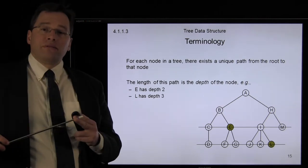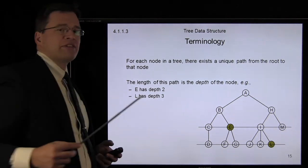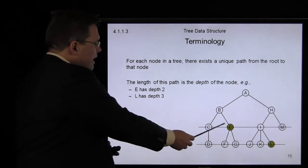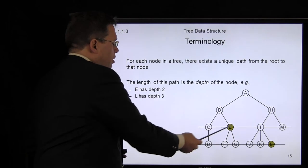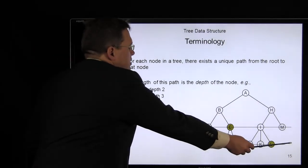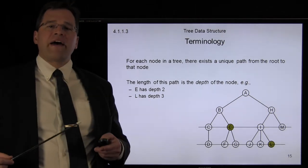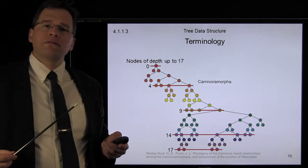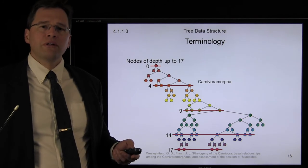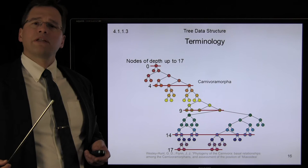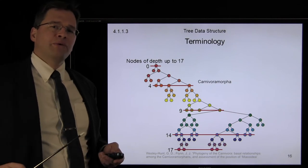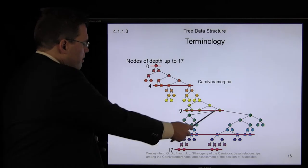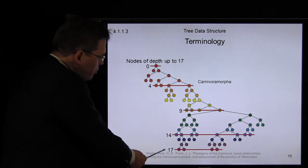If we take this root node, for every single node there is a unique path from the root node. The length of that path will be said to be the depth of the node. In this case, E has depth two, as do all these other nodes here. Similarly, L has depth three, as do all the other nodes that have a path of length three from the root node. The root node is at depth zero — it has a path containing only one element, so the length of that path is zero. These are the nodes at depth four, depth nine, fourteen, and we have four nodes at depth seventeen.